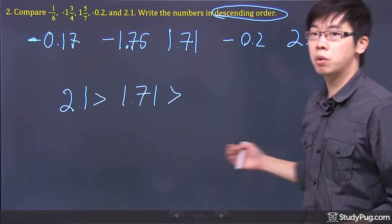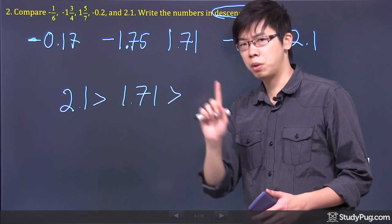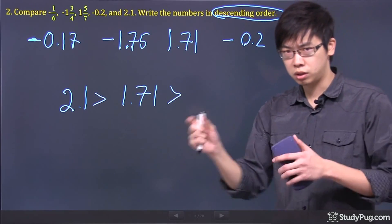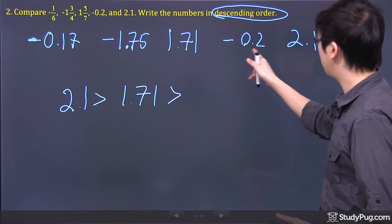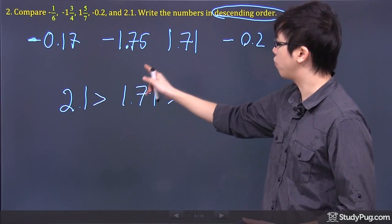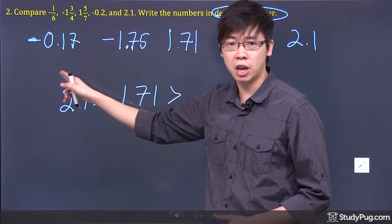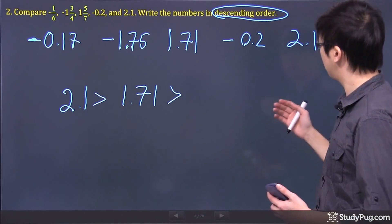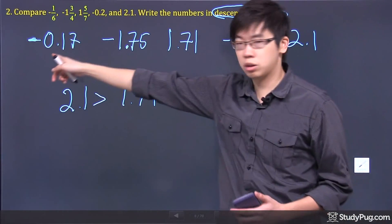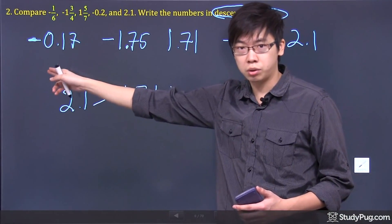After you're done, let's keep going down to the negative side. But be careful. The number that's closer to zero is bigger. If you're looking at negative 0.2, negative 1.75, and negative 0.17, the largest number between these three is actually negative 0.17 because it's closer to zero.